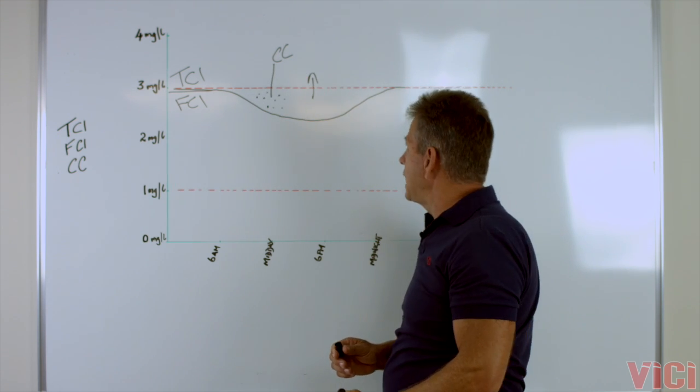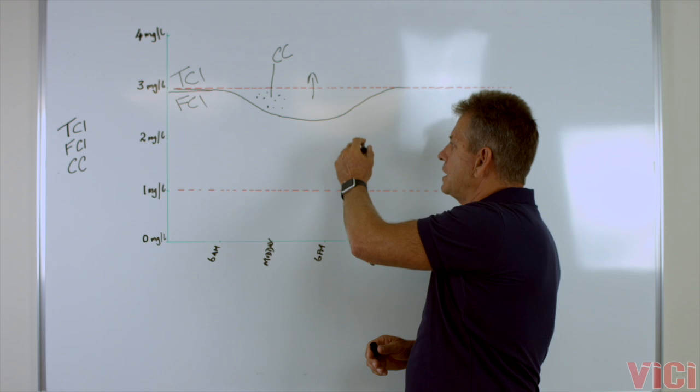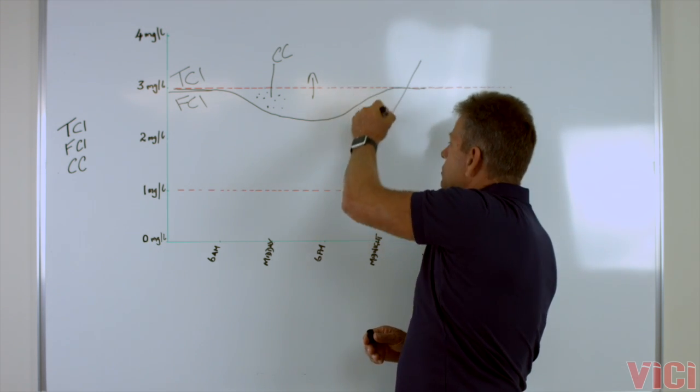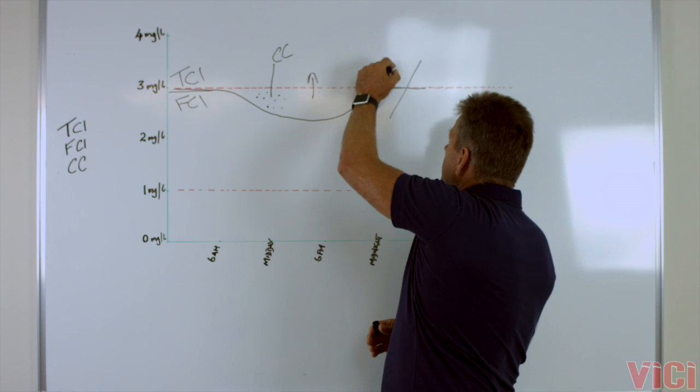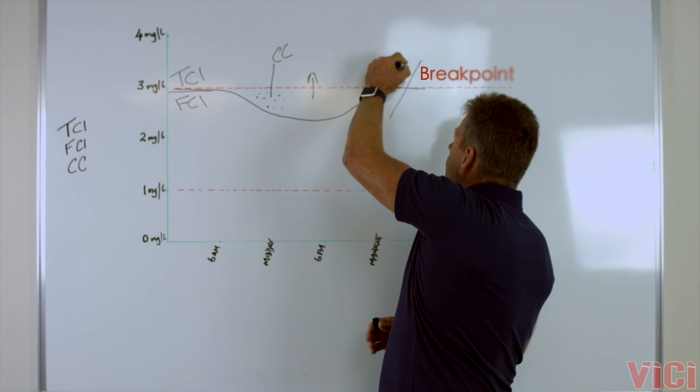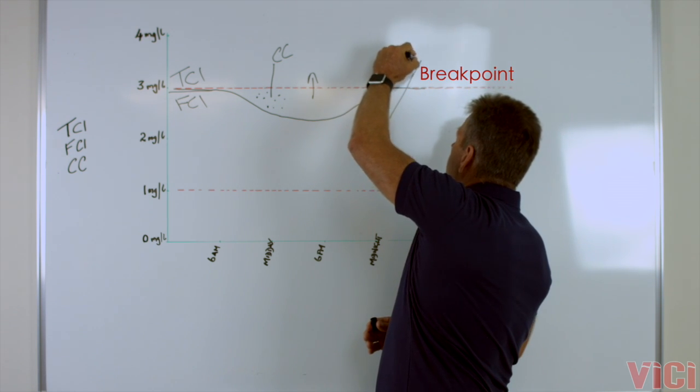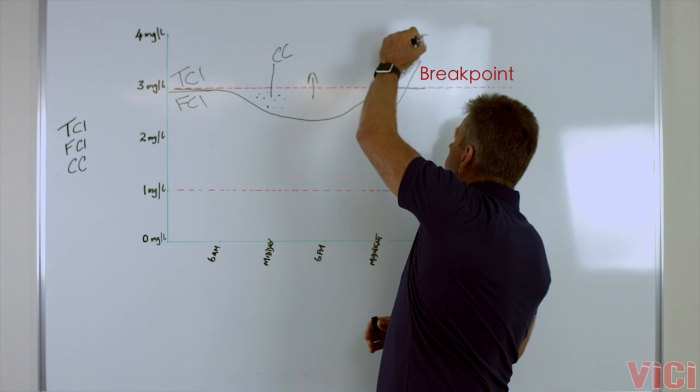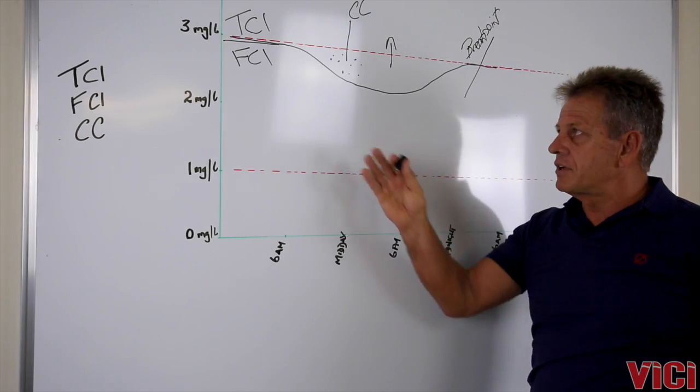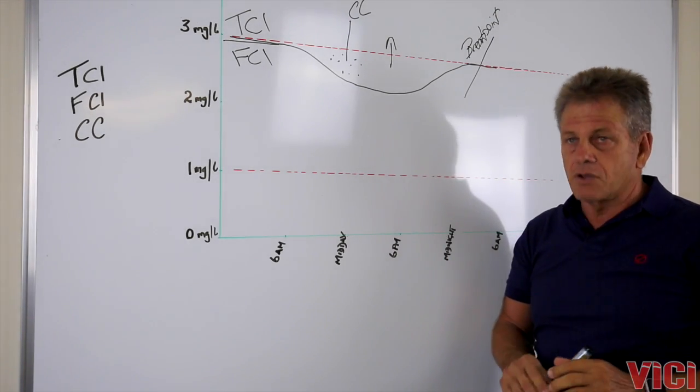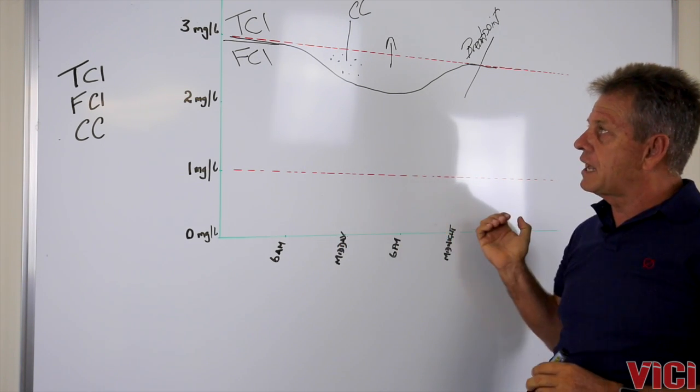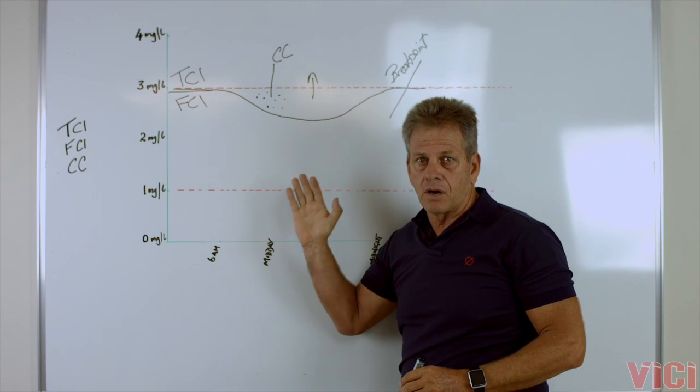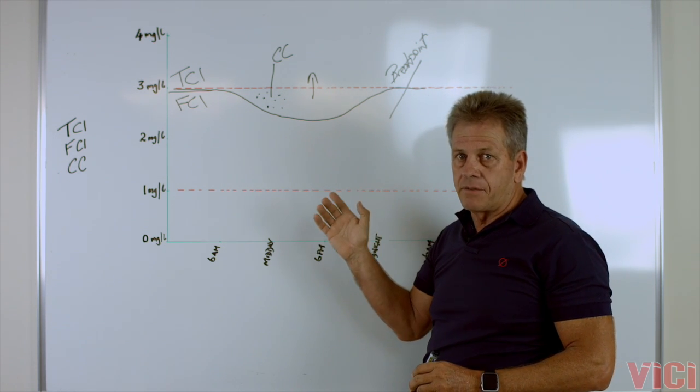We want to be able to get the free and available chlorine back to the total chlorine level starting the following day, and this is what we call breakpoint or breakpoint chlorination. So you can see there that by having a good circulation system, a good disinfectant system using chlorine, the pool has fully recovered and all of the combined chlorine has now left the pool.